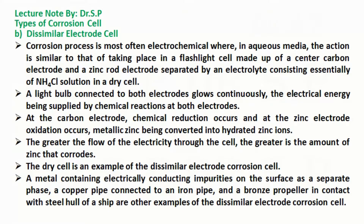At the carbon electrode, chemical reduction occurs, and at the zinc electrode oxidation occurs, with metallic zinc being converted into hydrated zinc ions. The greater the flow of electricity through the cell, the greater is the amount of zinc that corrodes. The dry cell is an example of the dissimilar electrode corrosion cell.